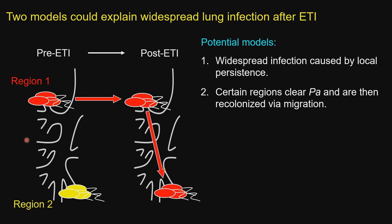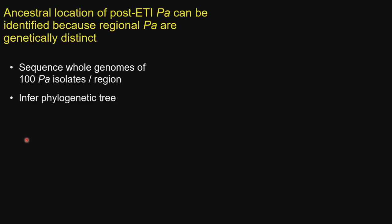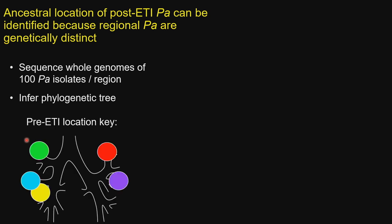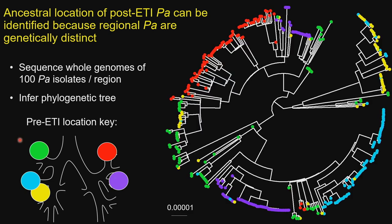We can distinguish between these models because the Pseudomonas in different lung regions are genetically distinct from one another — we can use DNA to distinguish Pseudomonas from different regions. These are usually clonally related isolates that have evolved independently in different lung regions, resulting in unique genetic signatures linked to location. To show genetic distinctness, we sequence whole genomes of 100 Pseudomonas isolates per region, then infer a phylogenetic tree color-coded by sampling location, revealing clustering by location.